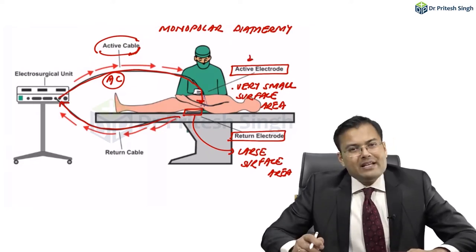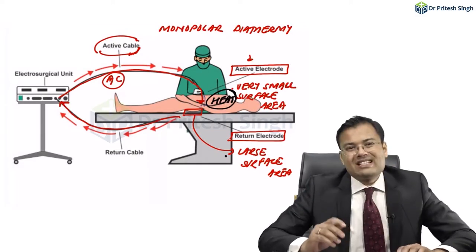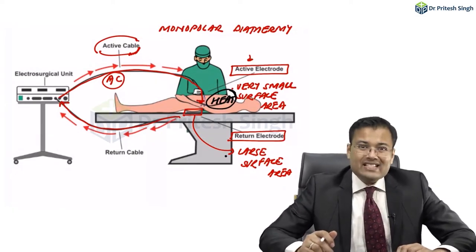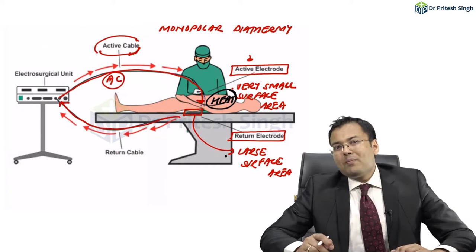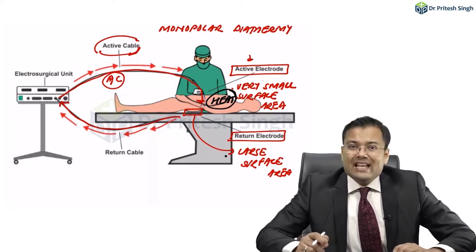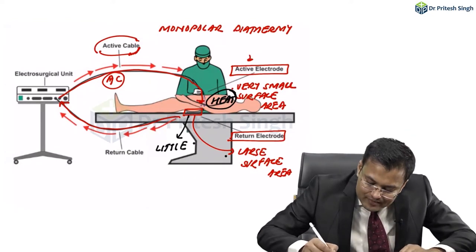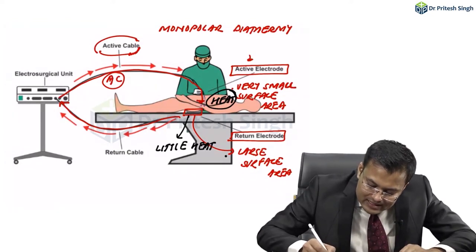Because of the very small surface area at the active electrode, concentrated electric current produces heat. In comparison, since the surface area is larger in the passive electrode, there is little heat production.